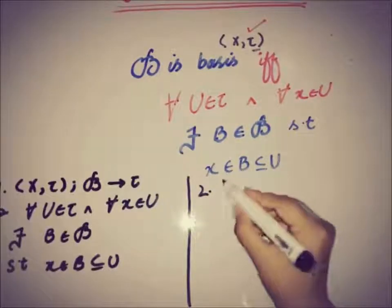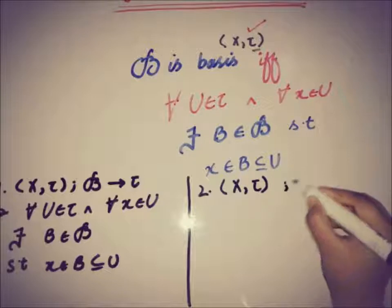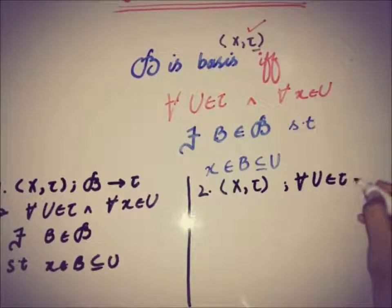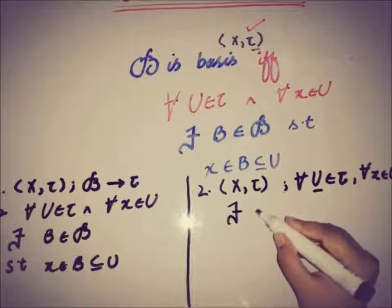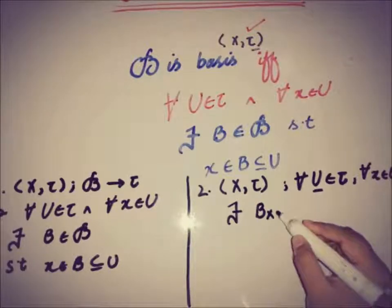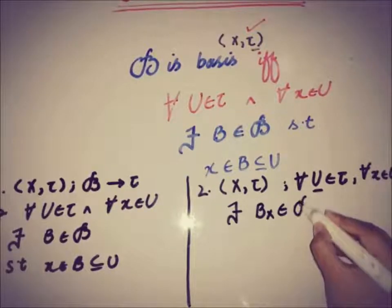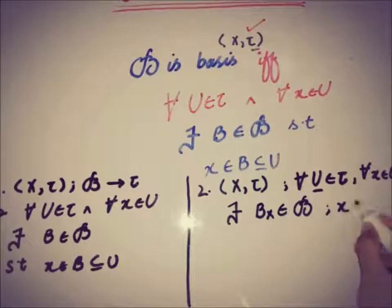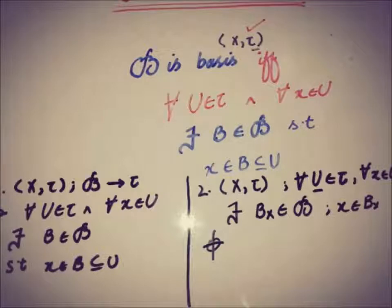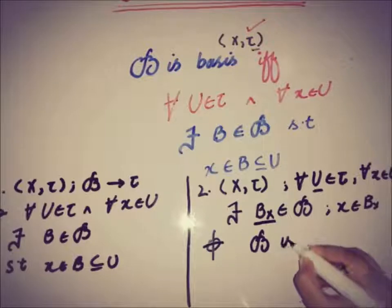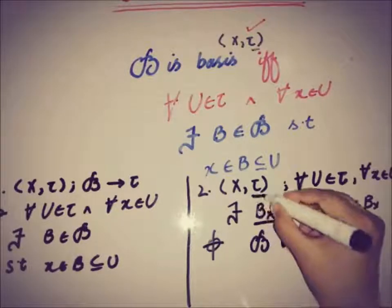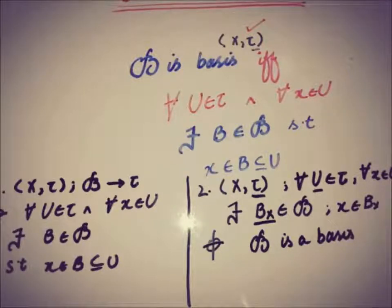The second angle — sufficiency — states: if (X, τ) is a topological space and for all open members U of the topology and for all x belonging to U, there exists a set B_x containing x such that x belongs to B_x and B_x belongs to the collection B, then from this given condition we can prove that this collection B is a basis of topology τ.